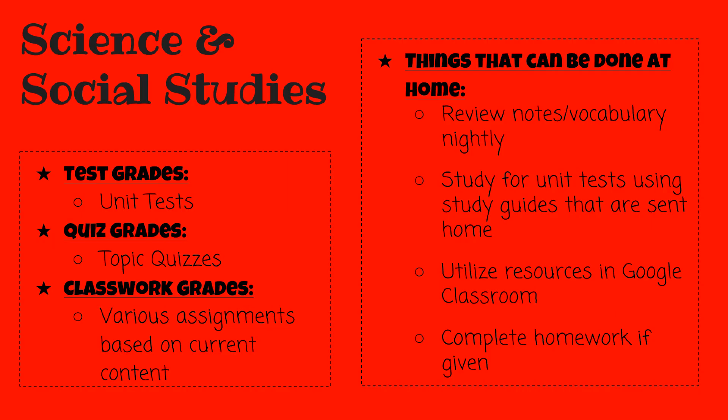In the science and social studies classroom, unit tests are given for test grades. Quizzes cover each topic within the unit, and for classwork grades, students are given various assignments based on content discussed in the classroom. There are several things that you can do at home to help with science and social studies. Review notes and vocabulary nightly. You may also study for unit tests using study guides that are sent home, utilize resources in Google Classroom, and complete homework if given.